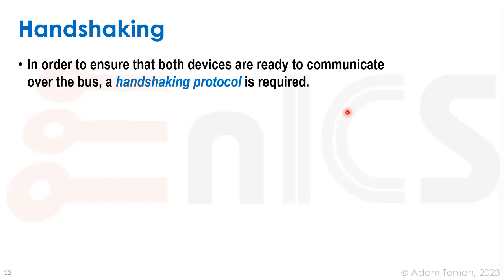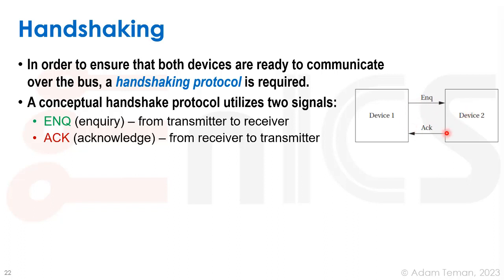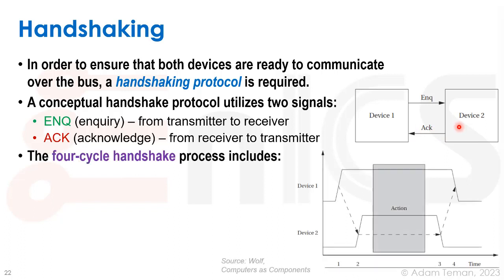A handshaking protocol ensures that both devices are ready to communicate. There are many types, but let's look at the four-cycle handshake. The first device has an inquire signal — the transmitter asks the receiver if it's ready. The second device, the receiver, has an acknowledge signal indicating it's ready to receive.